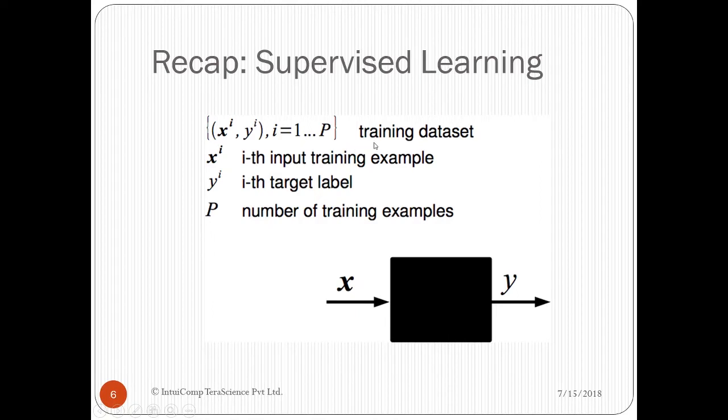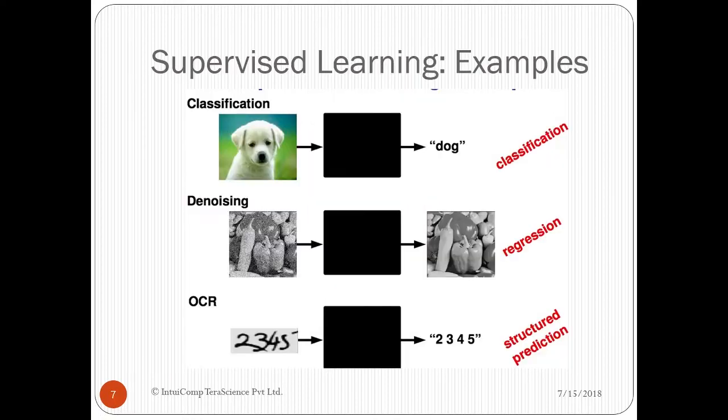Let's move on to some examples, so you can understand this better. Supervised learning: Classification is simply putting into categories. Neural networks have the capacity to recognize, differentiate, and understand images. As you can see, our ANN recognizes dog in the image, and output is given as dog. Similarly, regression is another supervised learning technique, which can be used to remove noisy data from images, that is denoising. Structured prediction is a learning technique that involves predicting structured objects, like numbers. Neural networks are widely used for optical character recognition, or OCR.